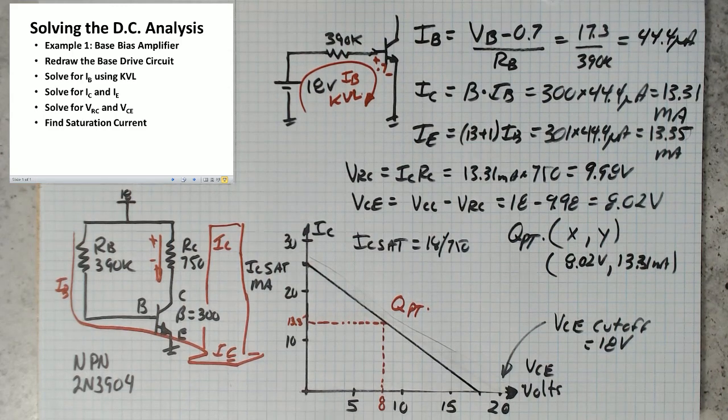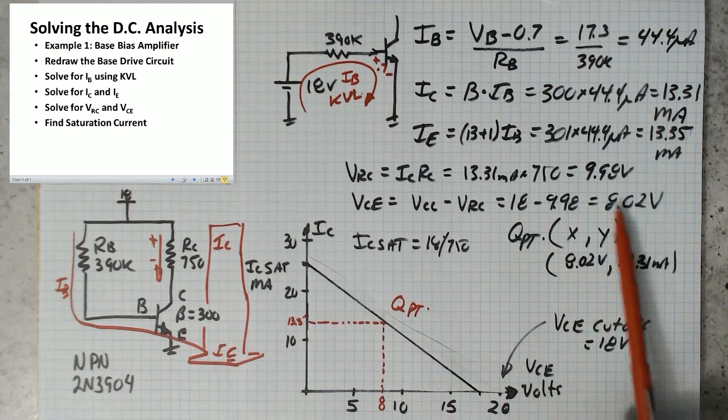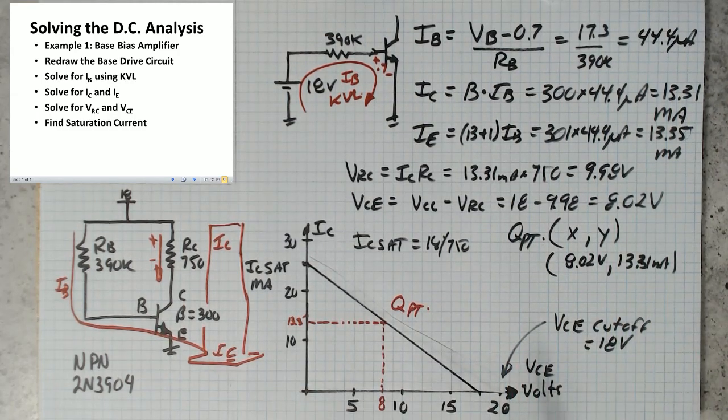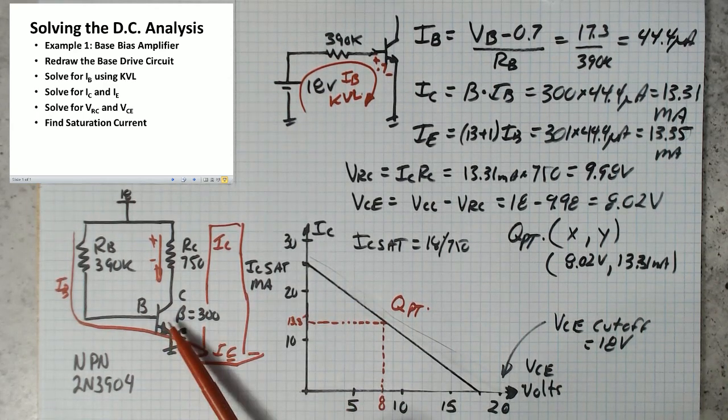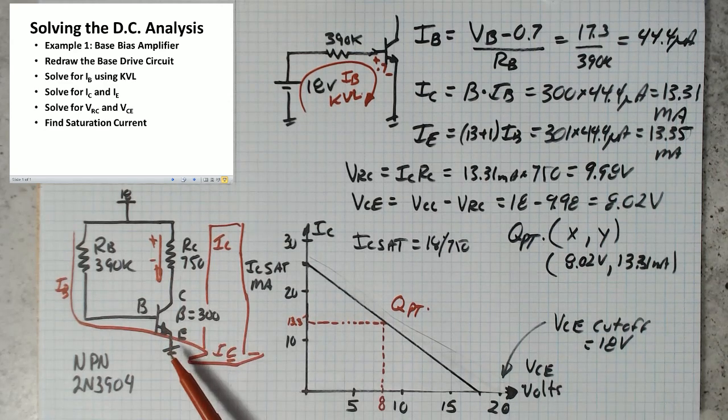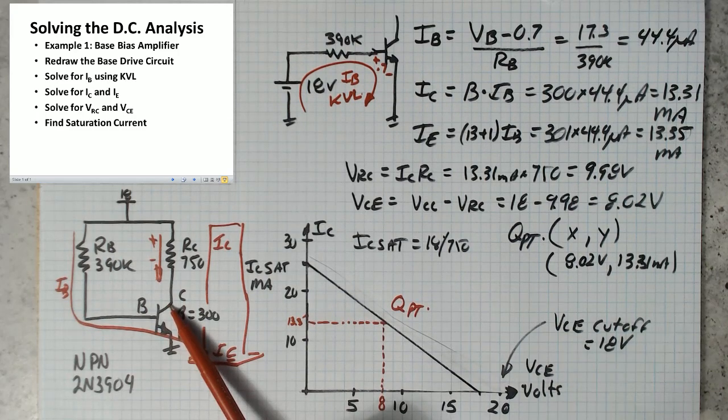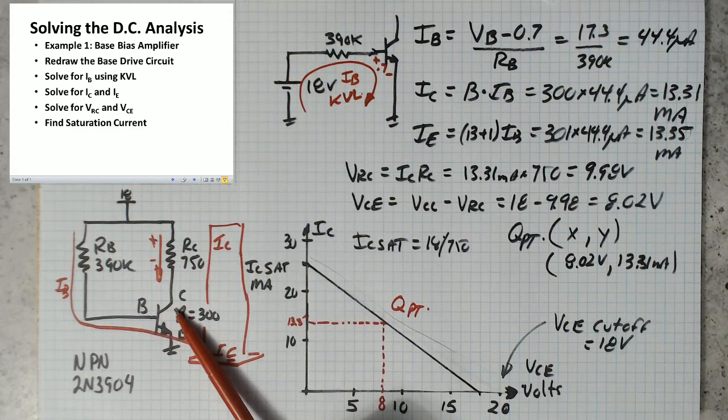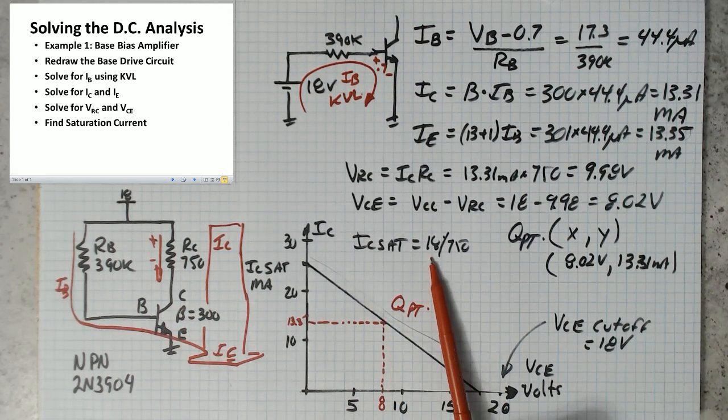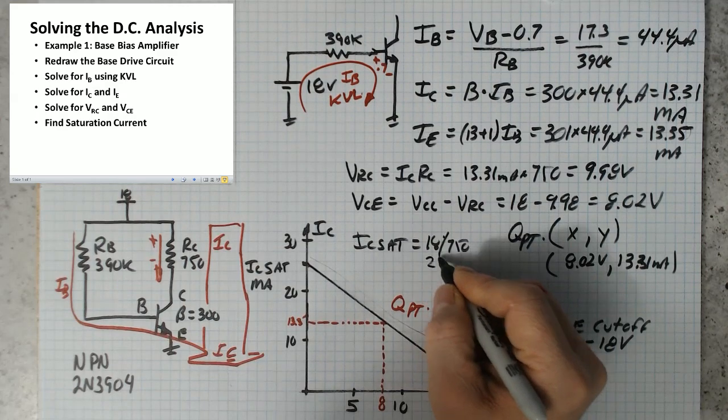So now we've got the Q point essentially, we've got 13.3 milliamps going through the transistor and 8 volts across it. Now we need to draw our load line, so we need to find the saturation current. So the saturation current is how much current goes through the transistor when it's shorted like a switch. So what you would do is you would consider this to be a switch and then you would calculate how much current is going down here. So IC sat would be 18 volts over 750. That comes out to 25.6 milliamps.